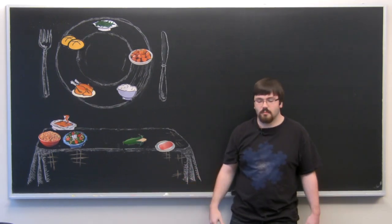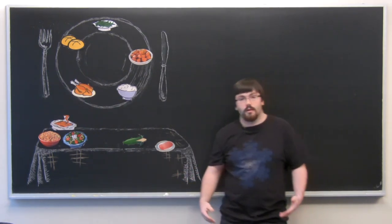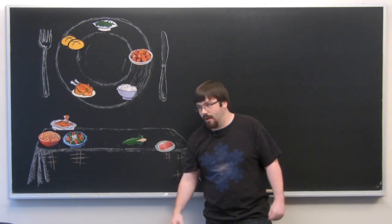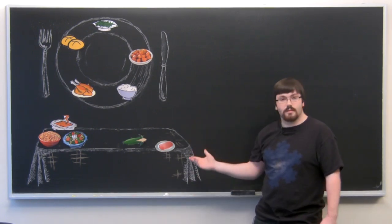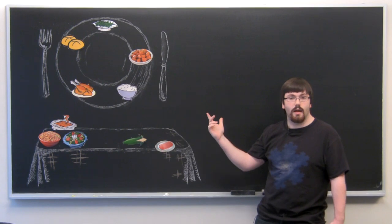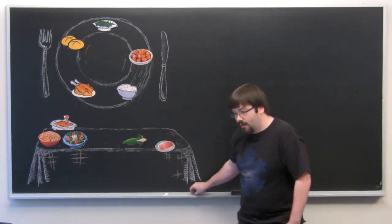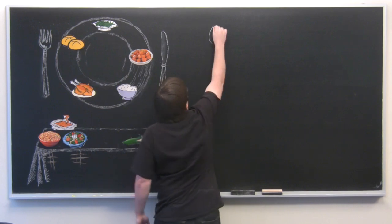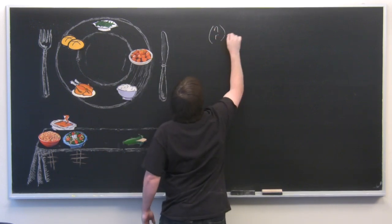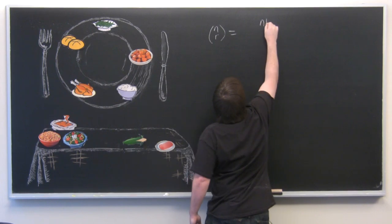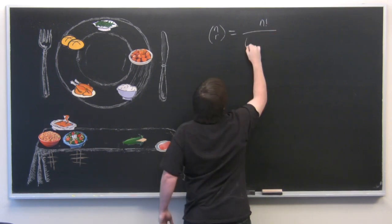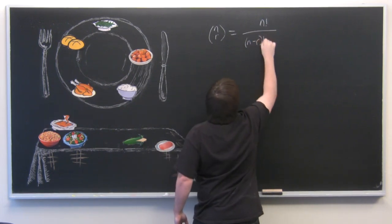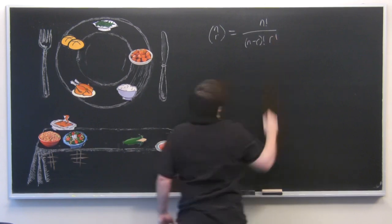Could be less, could be more, but we'll say that's about the average. So then we need to start doing some math. So we have ten items to pick from total and five items that go on the plate. So this sounds a lot like a combination problem. If you'll recall,